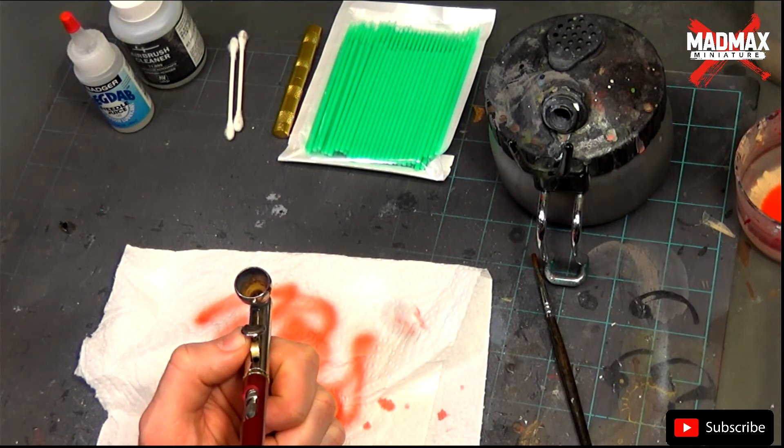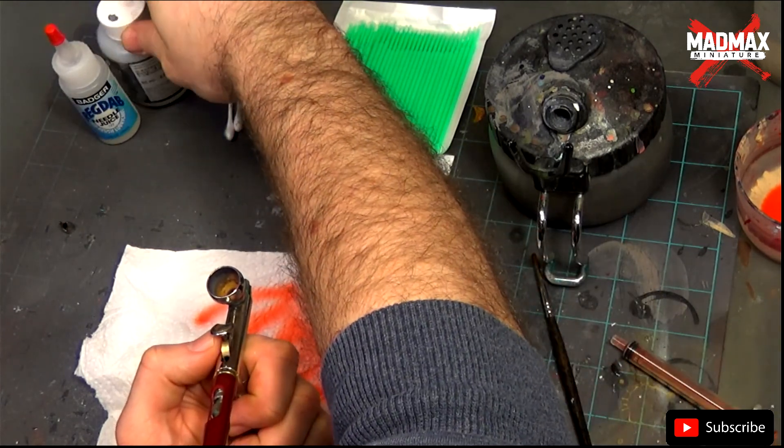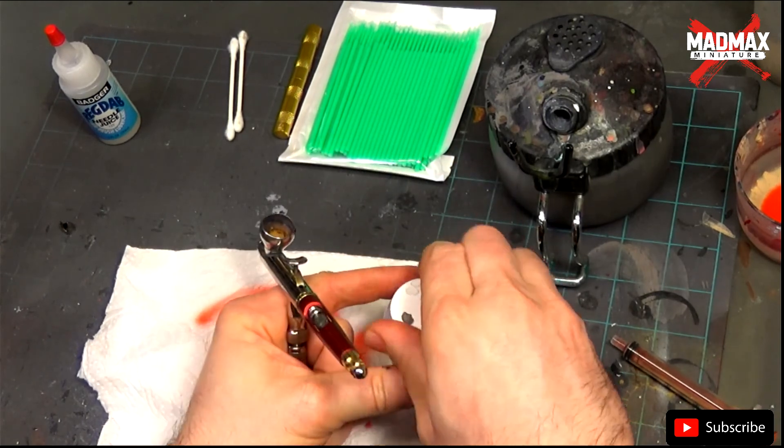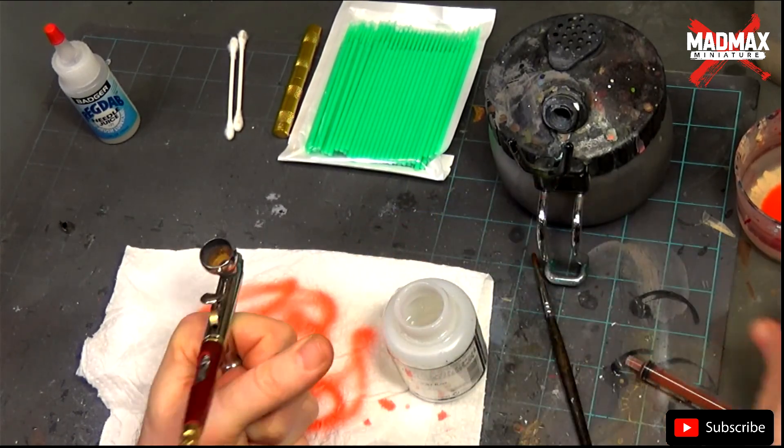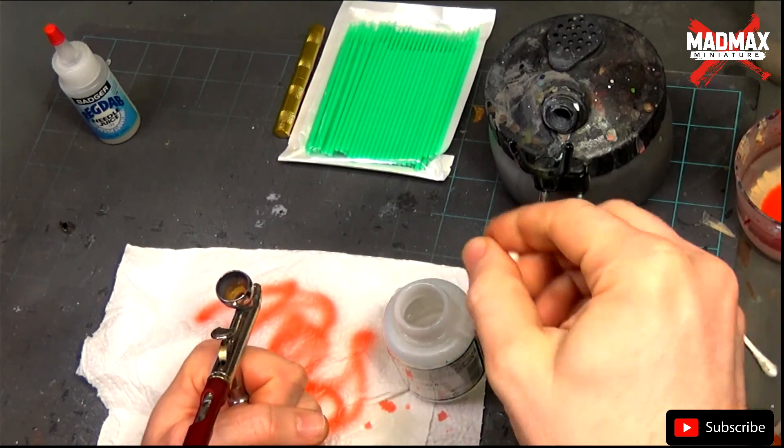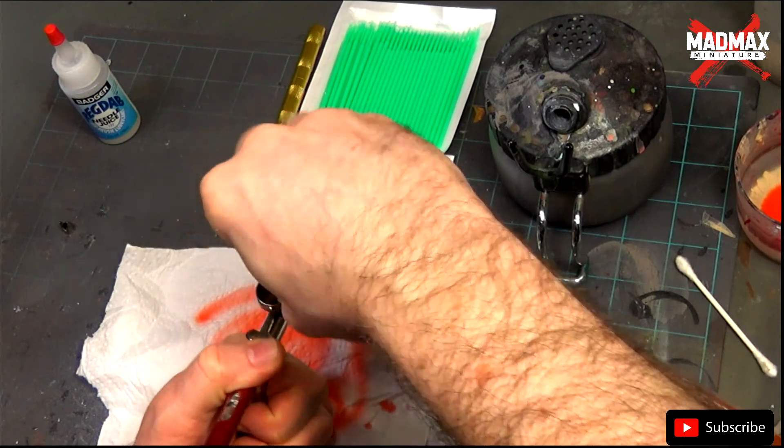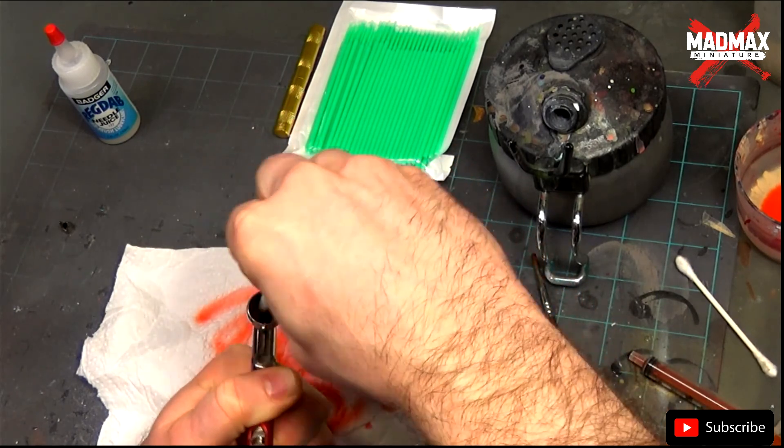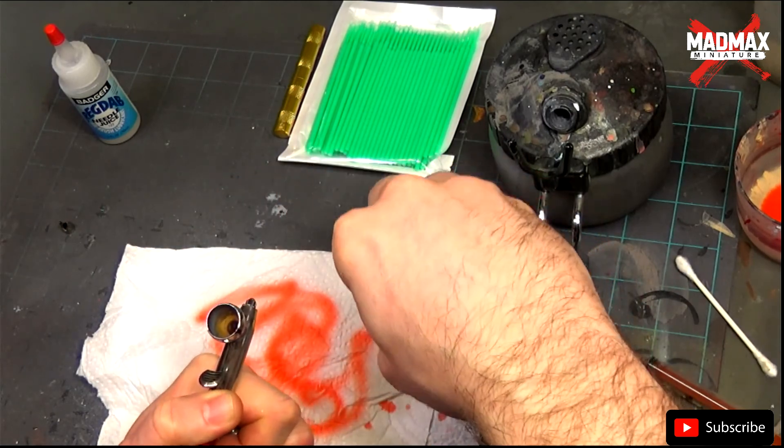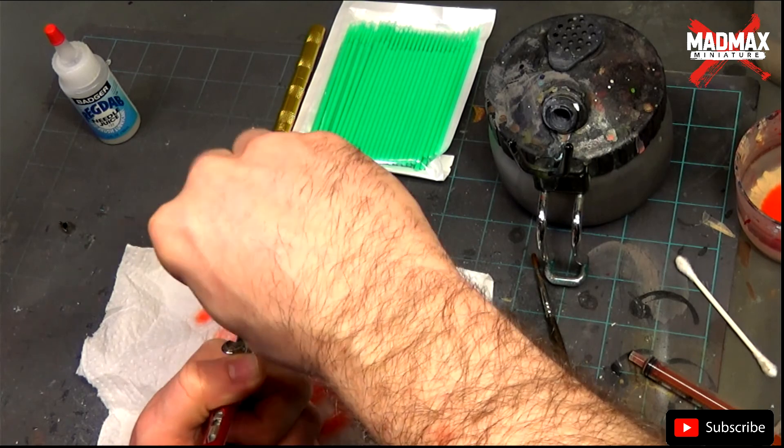This is where we will use the airbrush cleaner. So I take a Q-tip and I dip it into the airbrush cleaner. I clean the inside of the airbrush. Now I put a good amount of airbrush cleaner on the Q-tip so there is some cleaner that goes inside the airbrush and cleans the needle also.